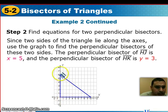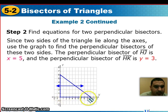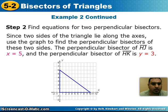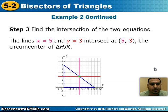Looking at the segment from 1 to 6, the midpoint gives the y equals 3 line. For the segment from 0 to 10, half of that is 5, so we draw a vertical line at x equals 5. The intersection point of these two perpendicular bisectors — the circumcenter — is at (5, 3).